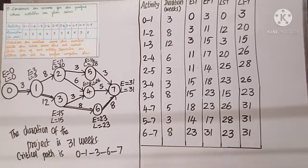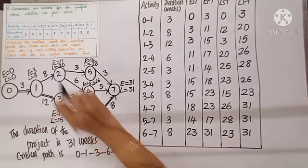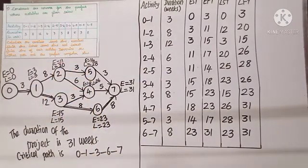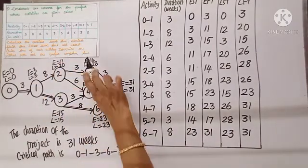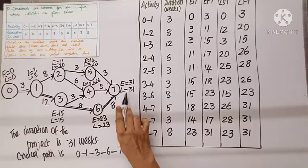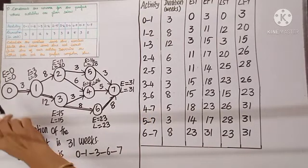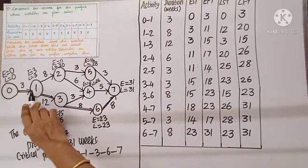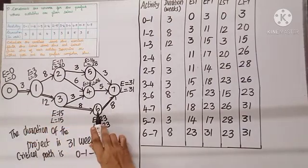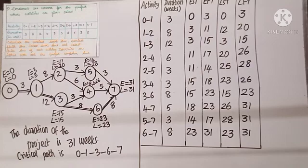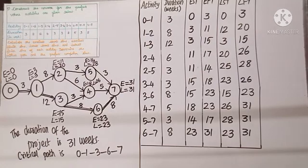The table is now complete as required by the question. The project completion time is thirty-one weeks. The critical path is zero-one, one-three, three-six, six-seven. That completes the entire answer.